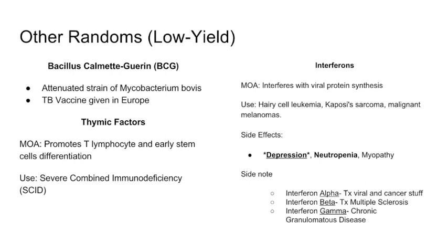Finally, interferons are cytokines released from cells when they become infected with a virus, alerting surrounding cells to make changes. They're used for hairy cell leukemia, Kaposi's sarcoma, and malignant melanoma. They literally interfere with viral protein synthesis to stop viral proliferation. Side effects include depression and neutropenia. Interferon alpha treats viruses and cancer, beta is used for multiple sclerosis, and gamma is used for chronic granulomatous diseases.